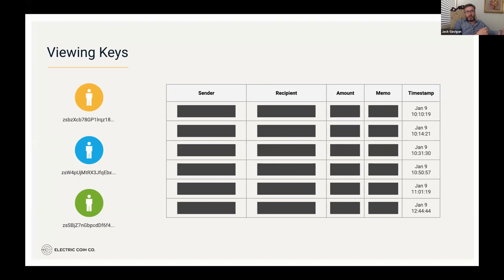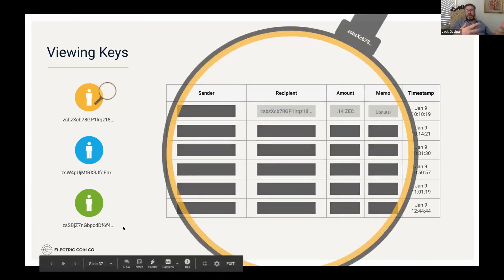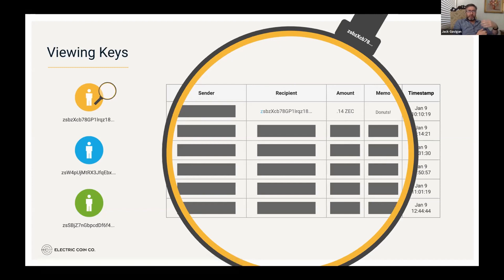This is a representation of a series of shielded transactions where the transaction details are hidden. What viewing keys allow you to do is give a third party a view into the details of the transaction. Normally only the participants — the sender and the recipient — get to see the details. But the owner of an address can generate a viewing key and share it with a third party to allow them to see the same information. Here's an example where the owner of the first address on the left has created a viewing key and shared it with us.